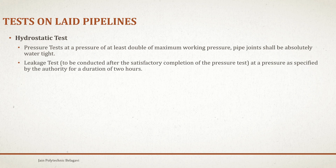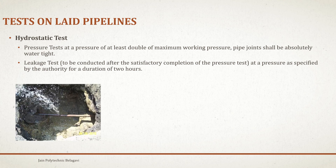There is a hydrostatic pressure test conducted at a pressure of at least double the maximum water pressure. Pipe joints shall be absolutely watertight. A leakage test is to be conducted after satisfactory completion of the pressure test, at a pressure as specified by the authority, for a duration of two hours.